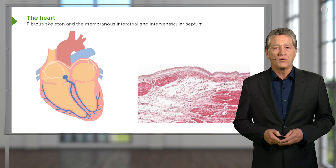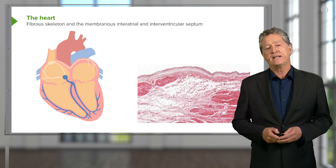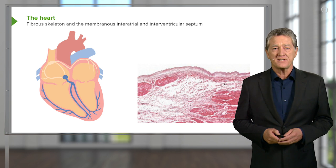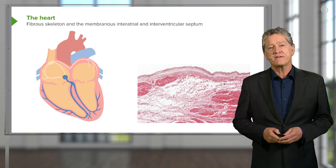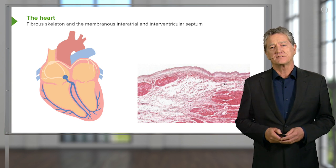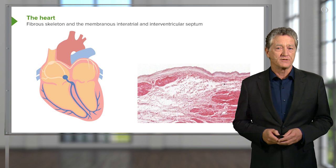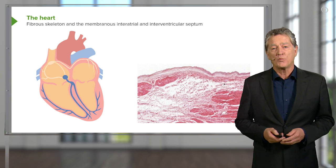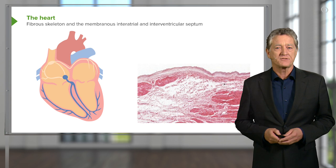One thing you can't easily appreciate in histological sections is that the heart has a very strong fibrous skeleton — very dense connective tissue and dense collagen. This fibrous skeleton is the insertion point for all the cardiac muscle, making it a very important component.